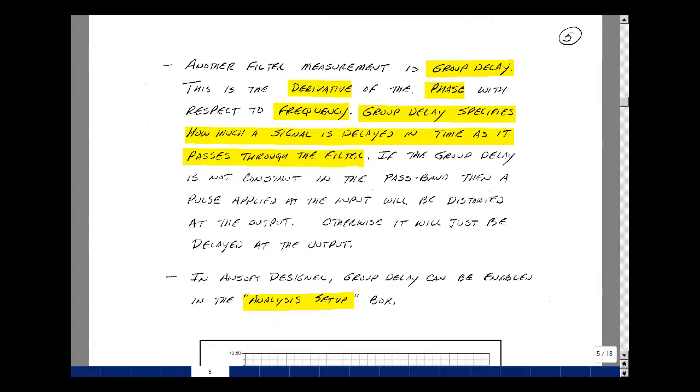Another filter parameter that the network analyzer can measure is a thing called group delay. This is the plot of the derivative of the phase angle with respect to frequency. Group delay specifies how much of a signal is delayed in time as it passes through a filter. If the group delay is not constant in the passband, then a pulse that's applied to the input will be distorted at the output. If it is constant, then you simply have just a time delay.